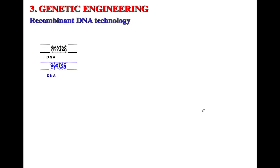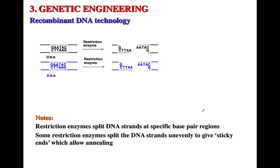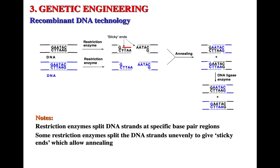In genetic engineering, restriction enzymes are used to split DNA strands at a specific base pair region, allowing you to incorporate genes of interest within that DNA. Restriction enzyme cuts often give rise to sticky ends, and these sticky ends allow for annealing. A DNA ligase then comes in and links the pieces back together.